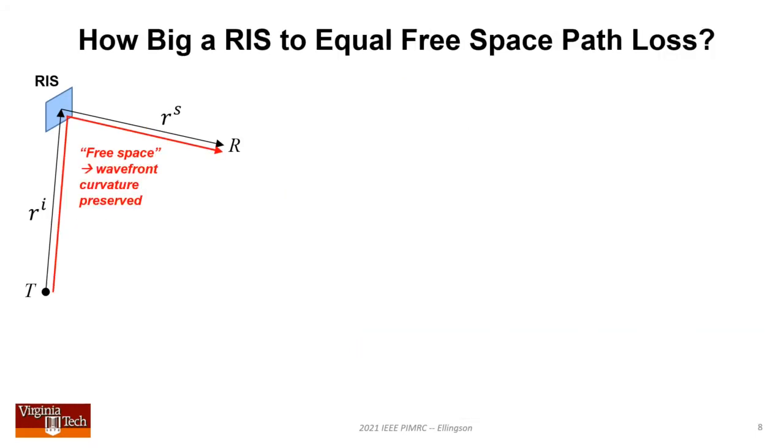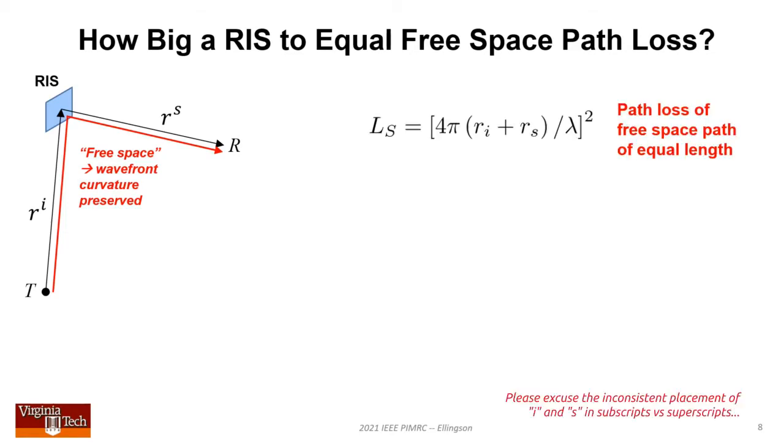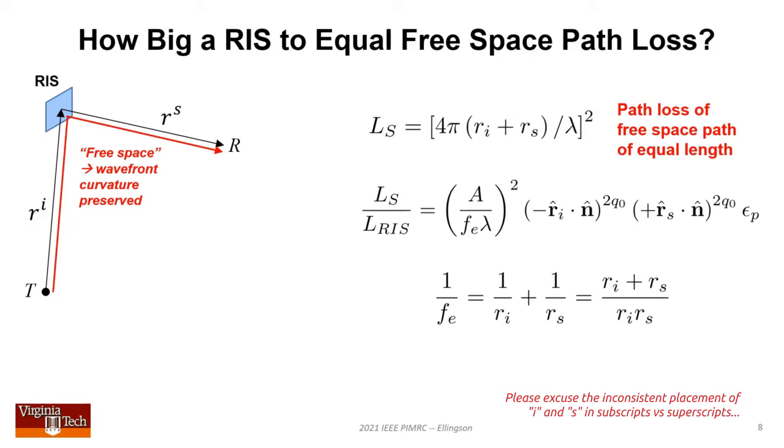Now we're ready to address how big must the surface be to yield path loss equal to the equal length free space path. Free space path loss is given by this familiar expression. We make an expression for the ratio of path losses, remarkably simple. For my choices, this ratio depends only on surface area A, frequency shown in terms of wavelengths, and f sub e, the effective focal length.